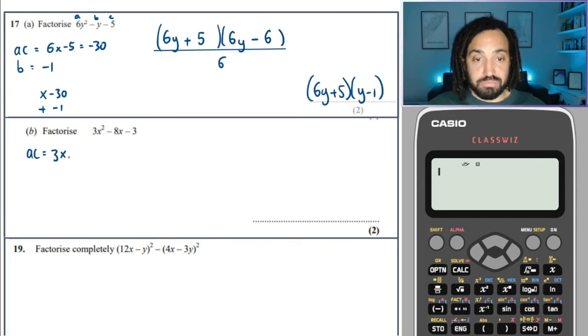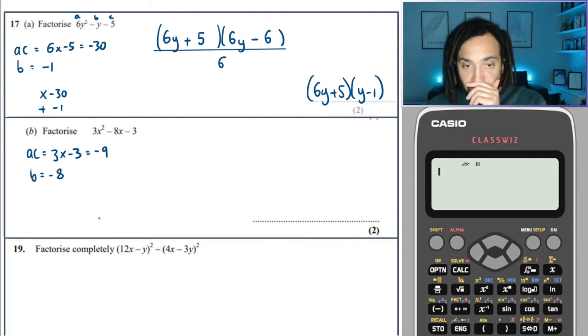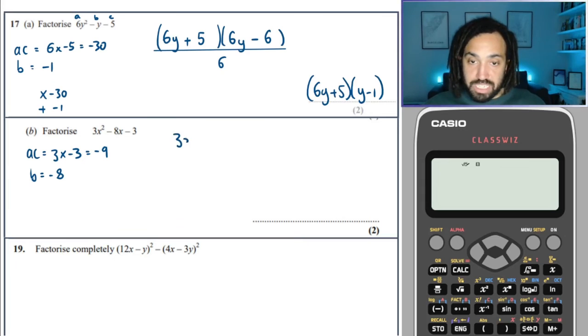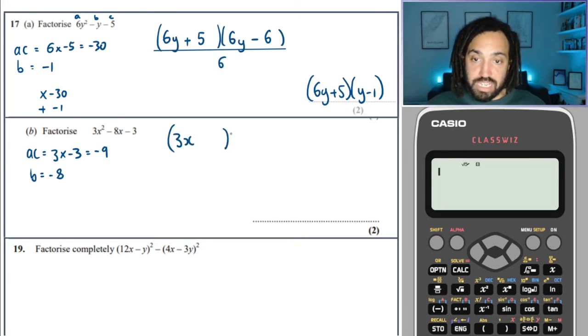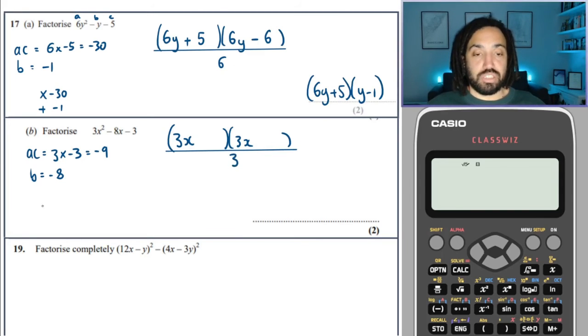Okay. This one, again, a times c is 3 times minus 3, which is minus 9. And b is minus 8. Because the a term is 3, we go 3x, 3x, all divided by 3.